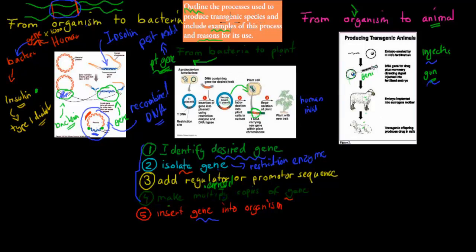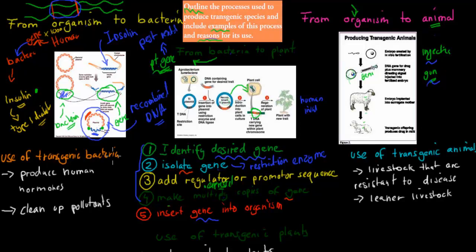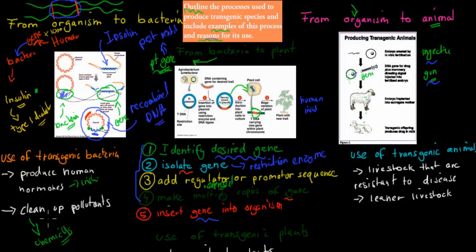Now we've gone through the process and the examples — the insulin-producing bacteria and the BT gene going from bacteria to plant. We still have to state reasons for use. For transgenic bacteria, they can produce human hormones such as insulin. They can also clean up pollutants — some bacteria have been modified to help break down chemicals, for example during a chemical spill.